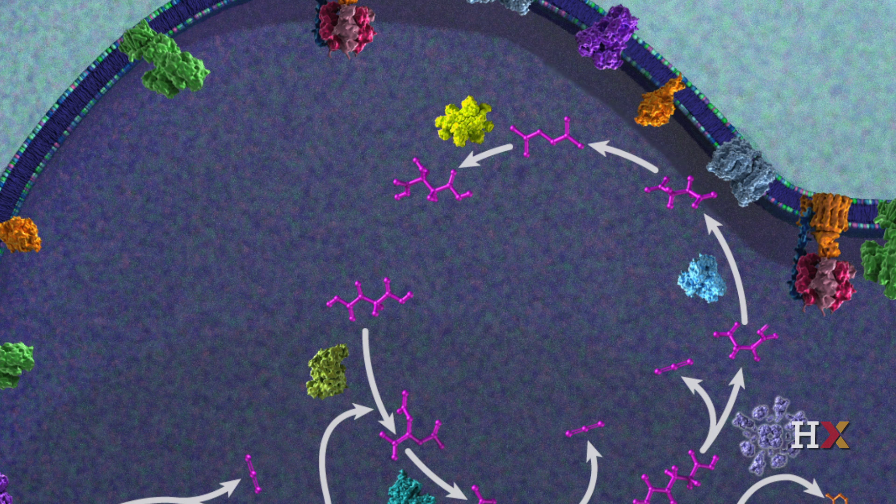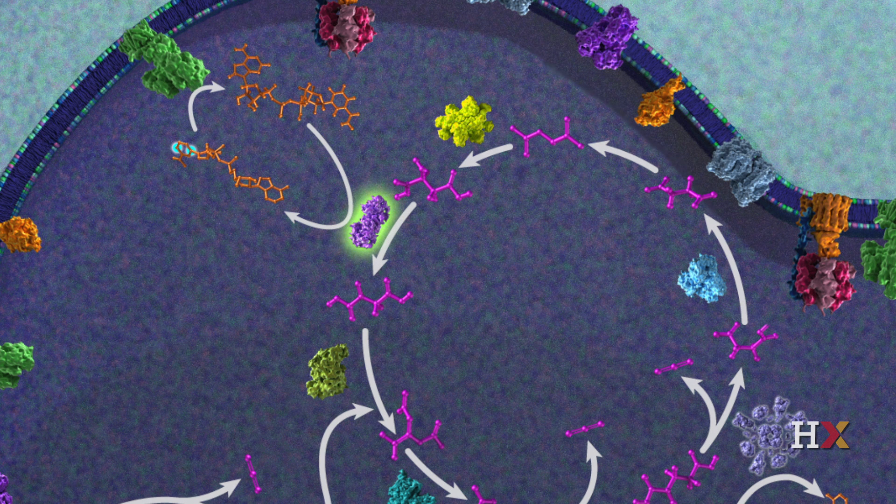In the seventh step, fumarate is converted to malate by the enzyme fumarase. And finally, in the eighth step, the enzyme malate dehydrogenase oxidizes malate to reform oxaloacetate and reduces a molecule of NAD plus to NADH in the process.